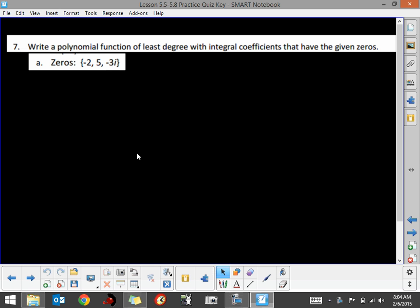In question number 7, we're supposed to write the polynomial function of least degree with integral coefficients that have the given zeros. We're given that this function has zeros of -2, 5, and -3i.